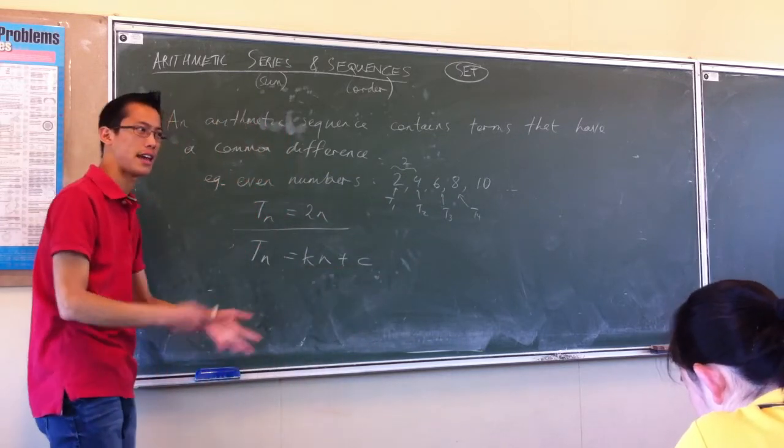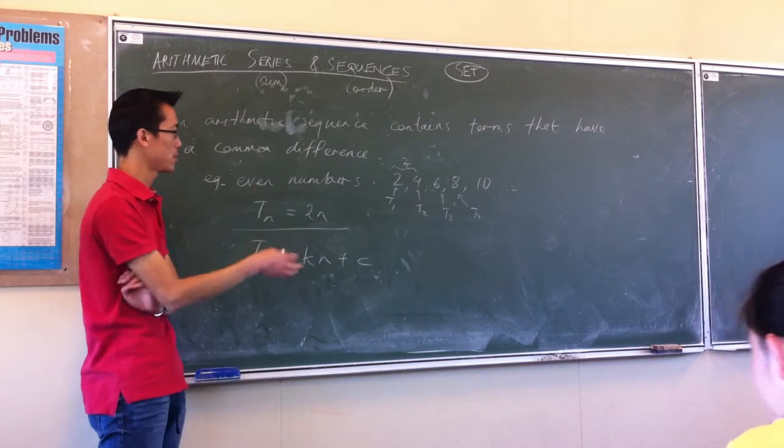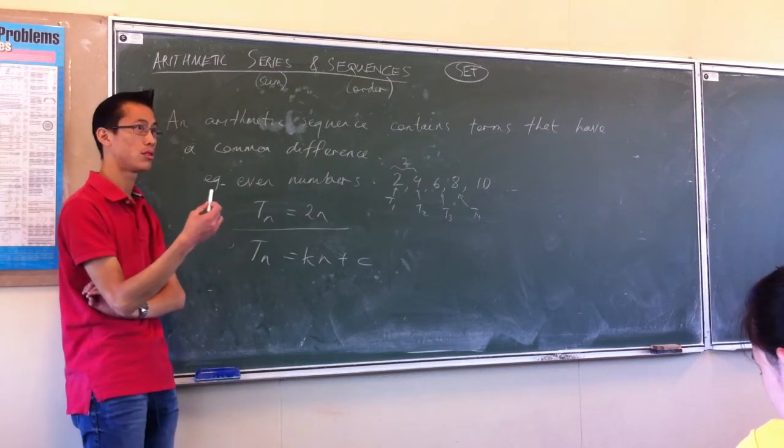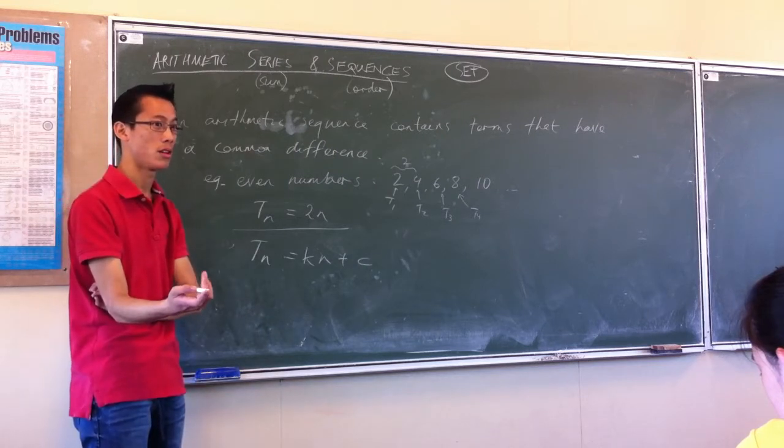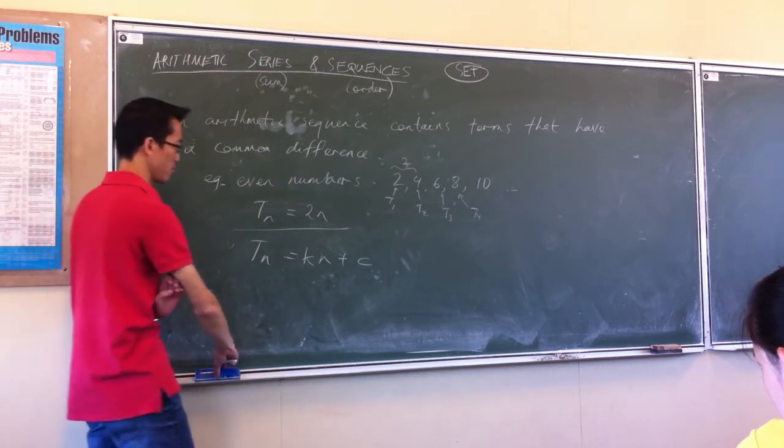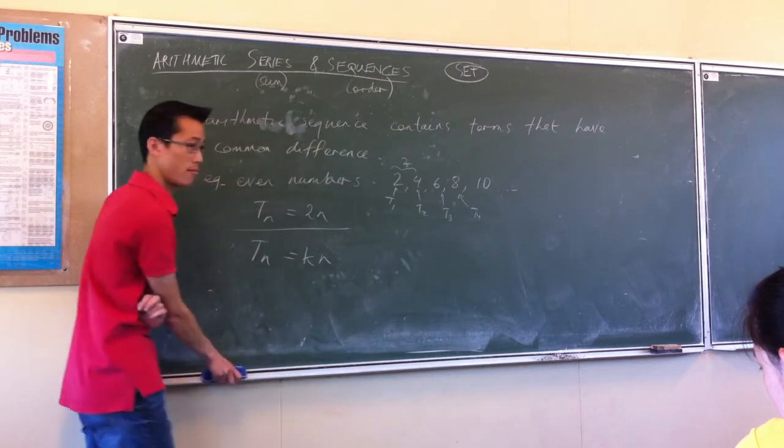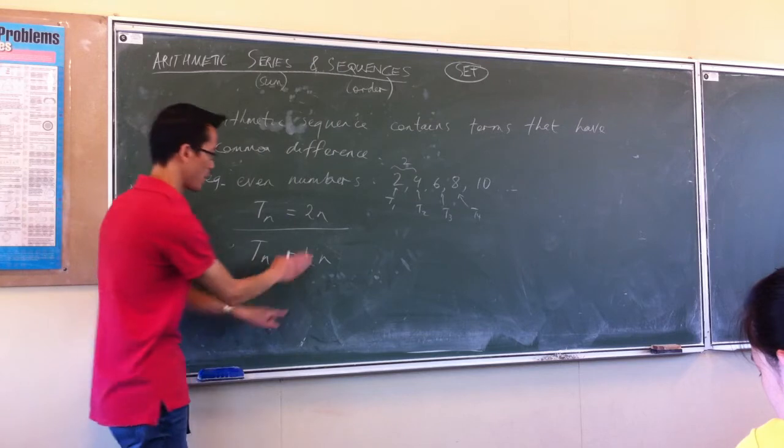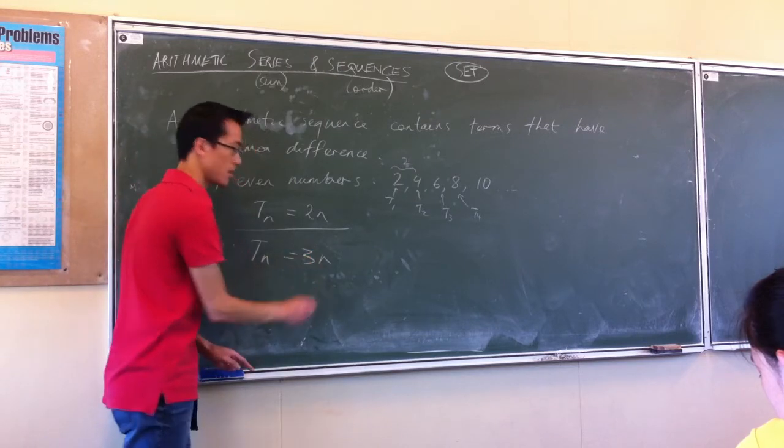So for instance, it would be really easy to say, these are the even numbers. What's T of n, what's the nth term for, say, the multiples of 3? Multiples of 3. 3, 6, 9, 12. Every time you're going up, what constant? You'll be going up 3.